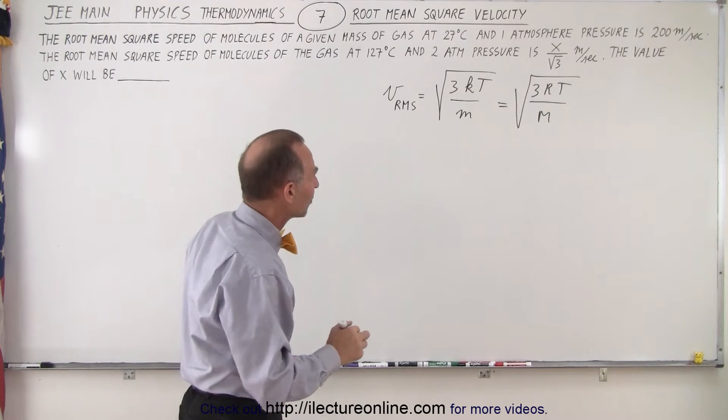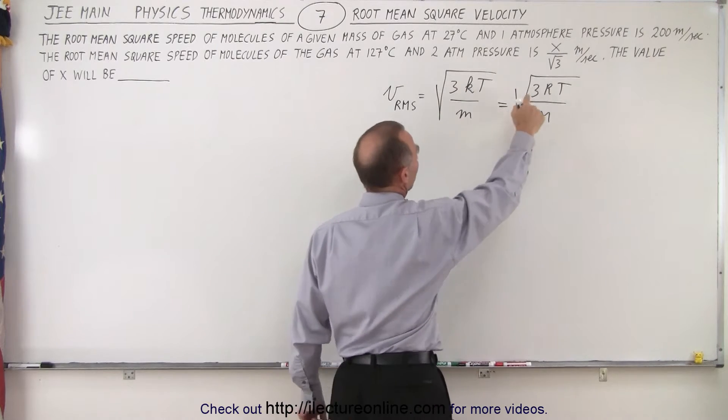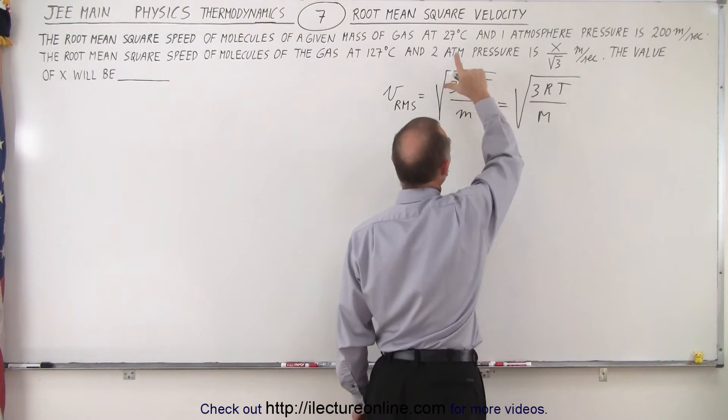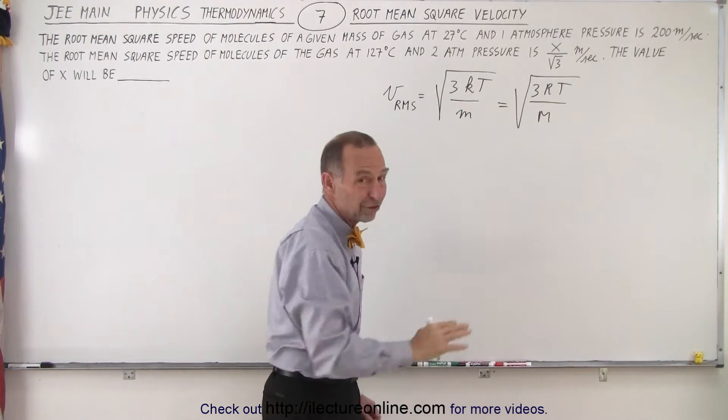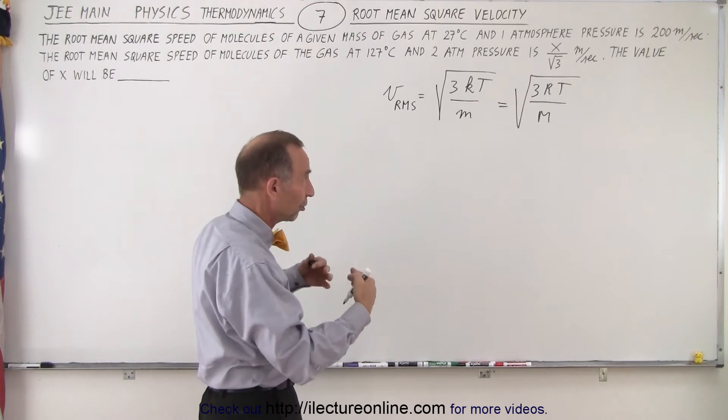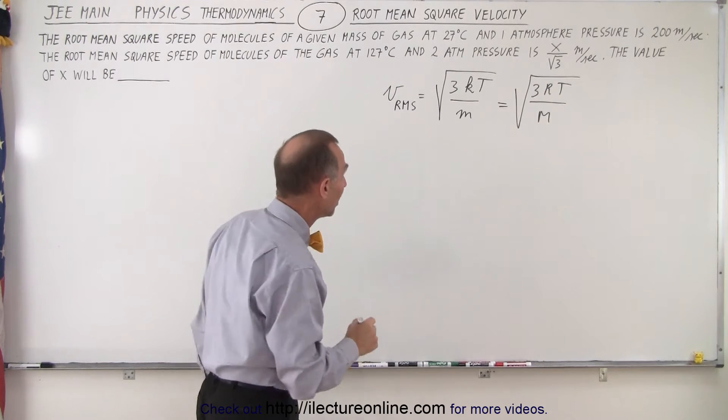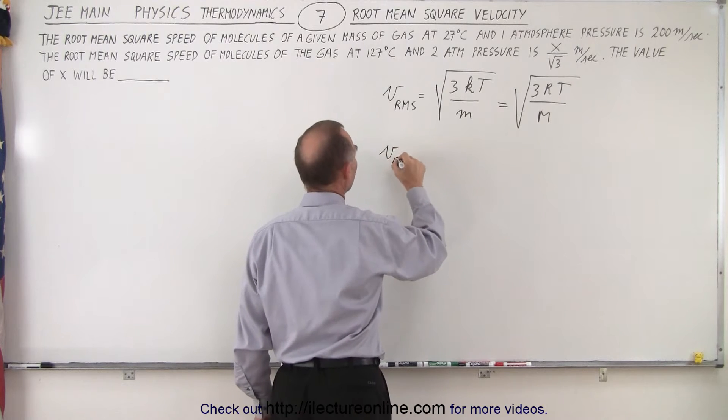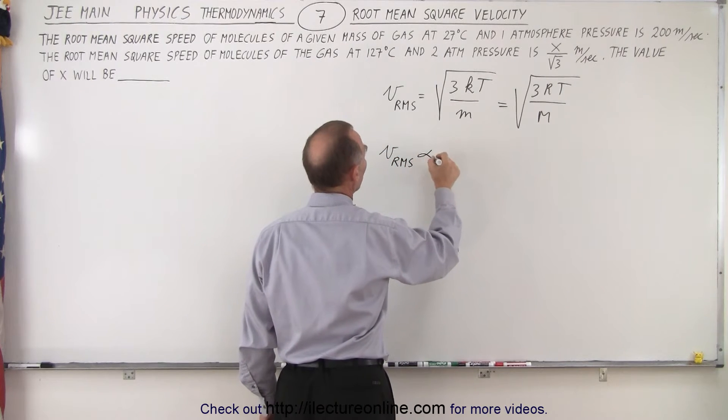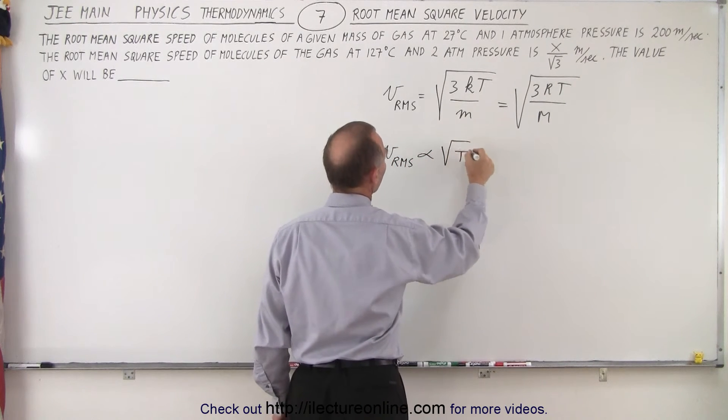So what we can see here, since 3K/M or 3R/M, since those are constant in the gas, and notice there's no mention of the pressure at all, so a change in pressure doesn't directly affect the RMS velocity. We can say that VRMS is proportional to the square root of the temperature,